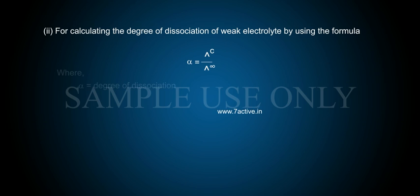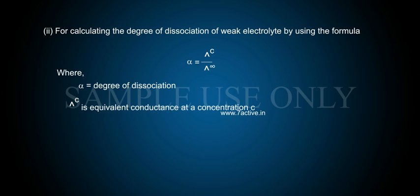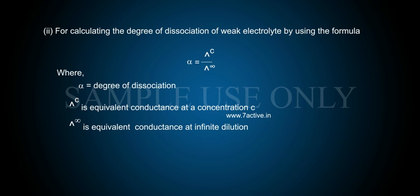Application 2 — for calculating the degree of dissociation of a weak electrolyte using the formula: α = Λ_C / Λ∞, where α is the degree of dissociation, Λ_C is the equivalent conductance at concentration C, and Λ∞ is the equivalent conductance at infinite dilution.